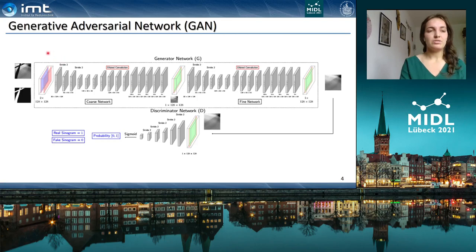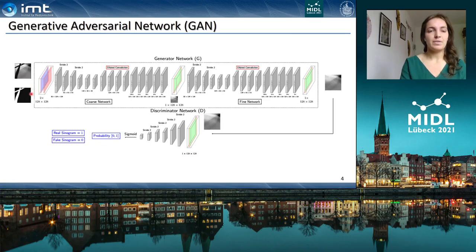The network used in this work is a generative adversarial network, which consists of a generator network G and a discriminator network D. The generator receives as input the projection data with the missing metal trace and a corresponding binary mask.